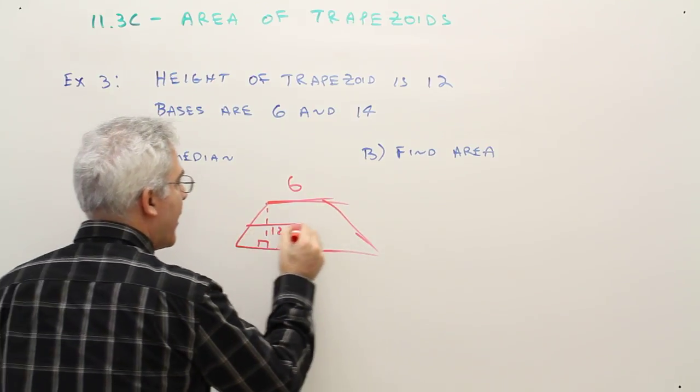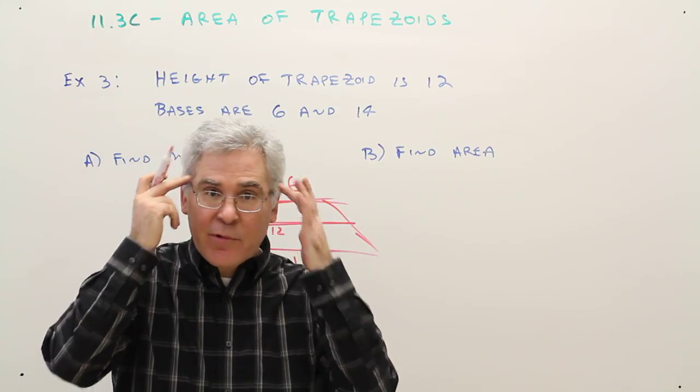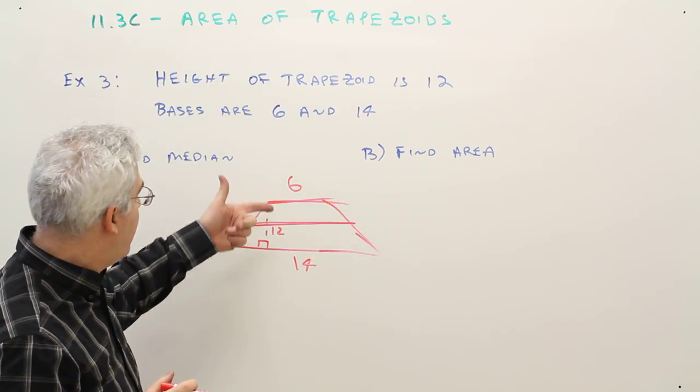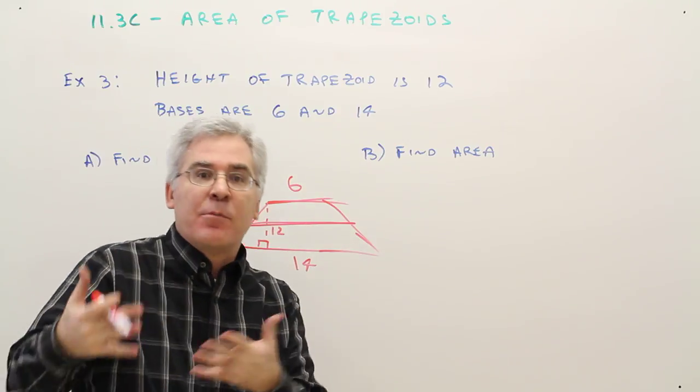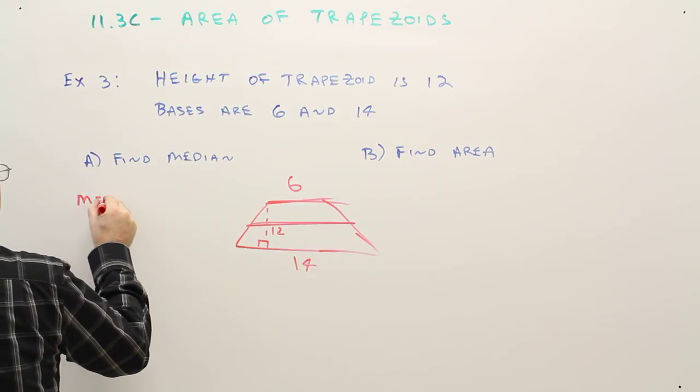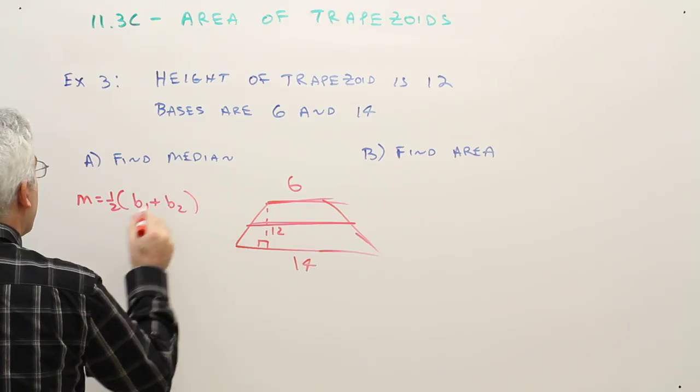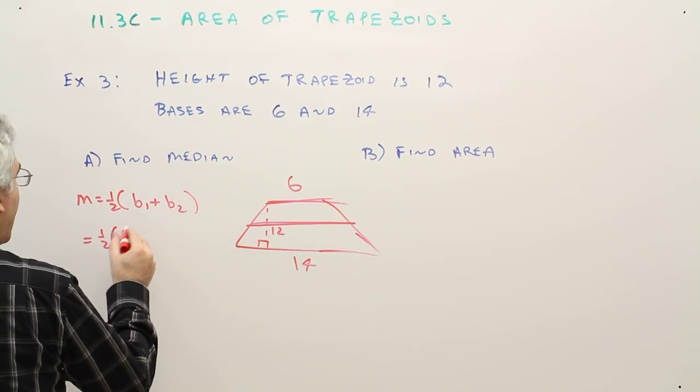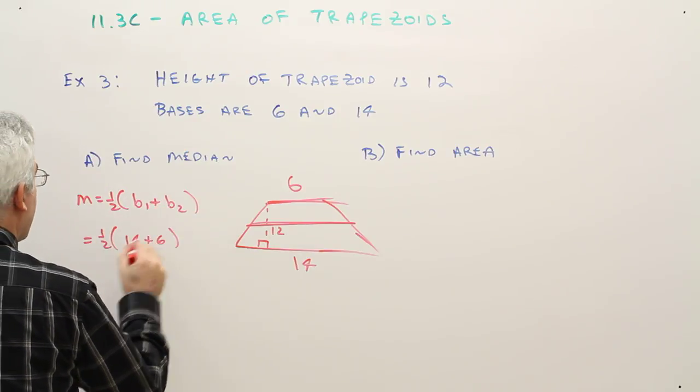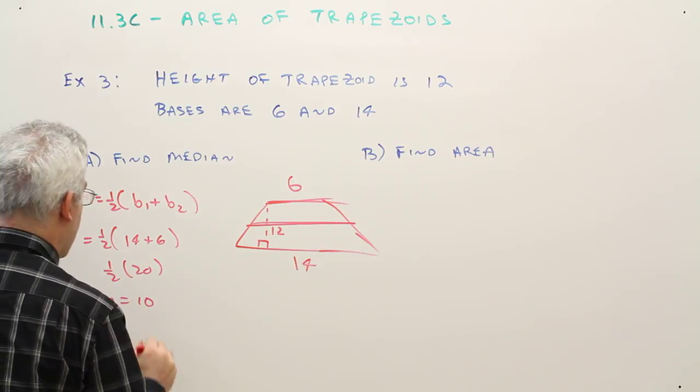So the median, once again, is going to be the average of the two bases. I just remember sum and divide by 2. I could do that in my head, it's going to be 10, but just if you want to see the work. So, median equals 1 half B1 plus B2 equals 1 half 14 plus 6, 1 half 20. So the median is 10.